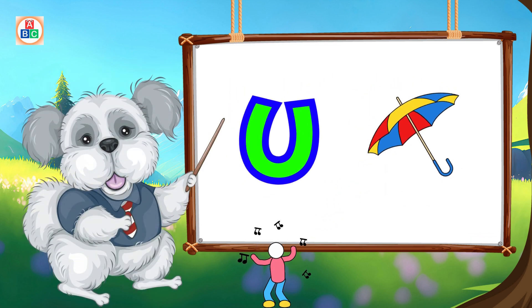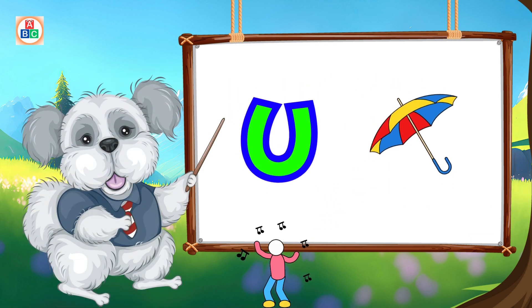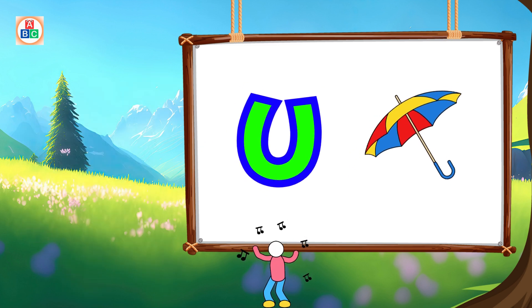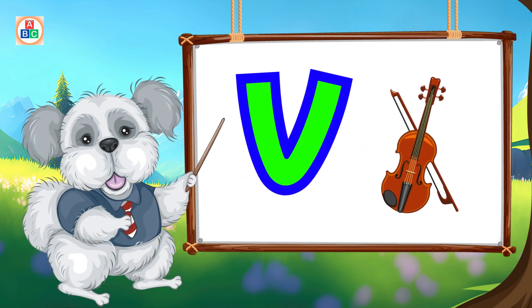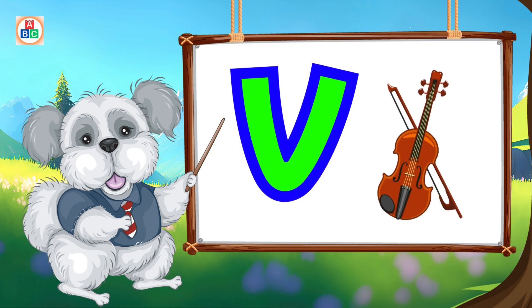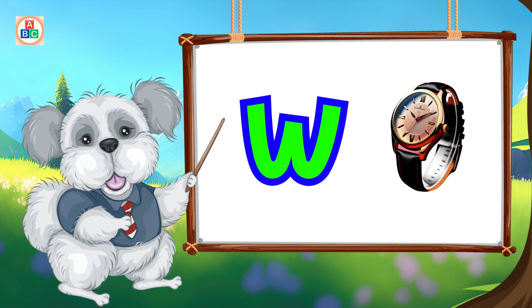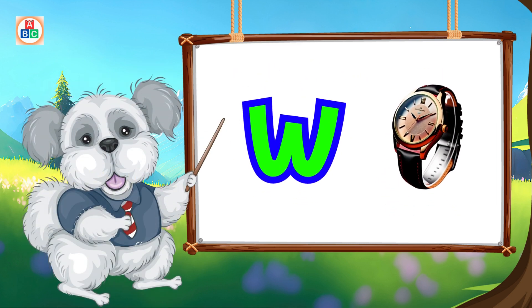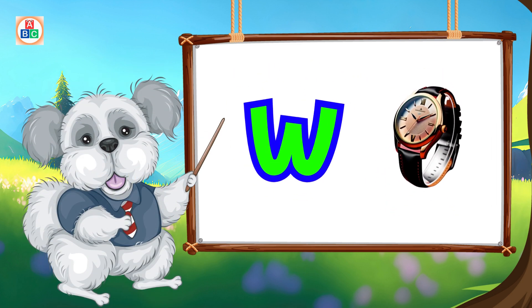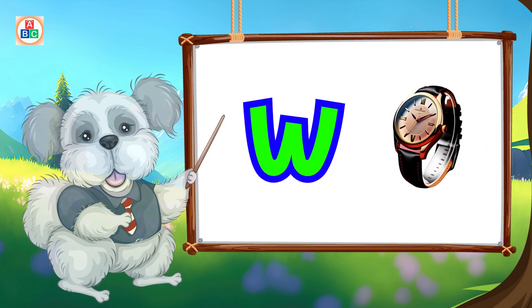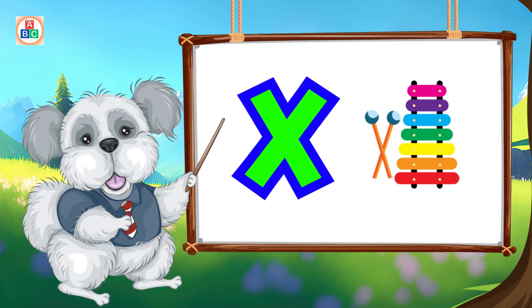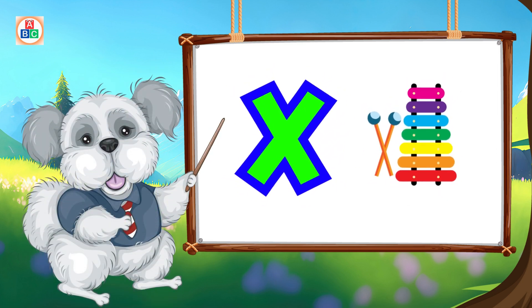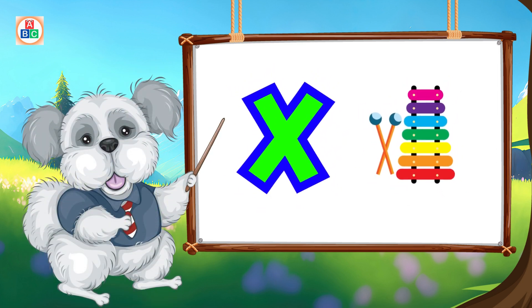U is for umbrella, u-u-umbrella. V is for violin, v-v-violin. W is for watch, w-w-watch. X is for xylophone, z-z-xylophone.